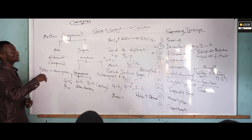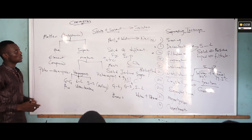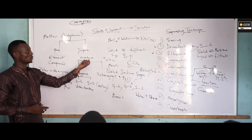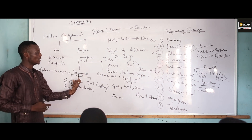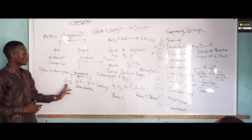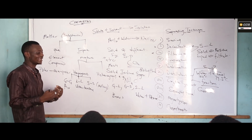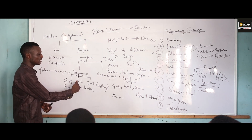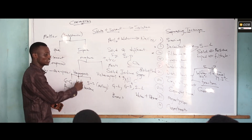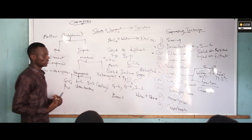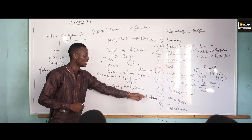Now let me summarize. We talked about matter — matter can be referred to as substance. Substance is divided into pure and impure substance. Under impure substance we have mixtures. Mixture is subdivided into two: homogeneous and heterogeneous. Homogeneous — the constituents are in the same state of matter, e.g., gas and gas, liquid and liquid, solid and solid. Heterogeneous — the constituents are in different states of matter, e.g., gas and liquid, liquid and solid, solid and liquid.